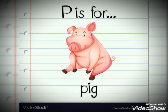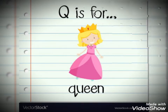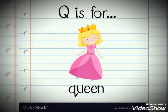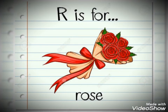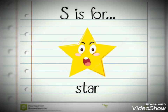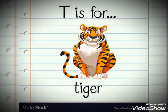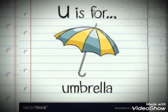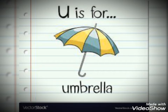P is for pig. Q is for queen. R is for rose. S is for star. T is for tiger. U is for umbrella.